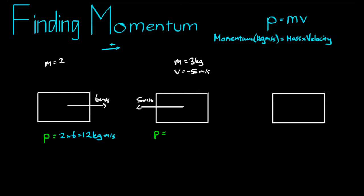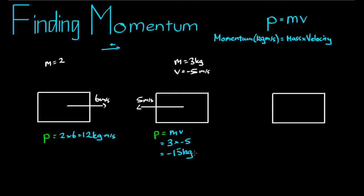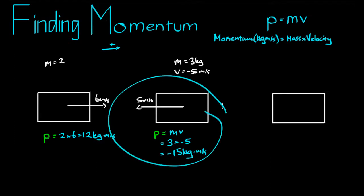Because velocity is a vector, it can be negative. If momentum is also a vector, that tells us that if the box is moving to the left, it'll have negative momentum. That makes sense, because when we do the calculation: p equals mv, mass is always positive, times velocity negative five, we get negative fifteen kilograms times metres per second. So we have a negative momentum here.